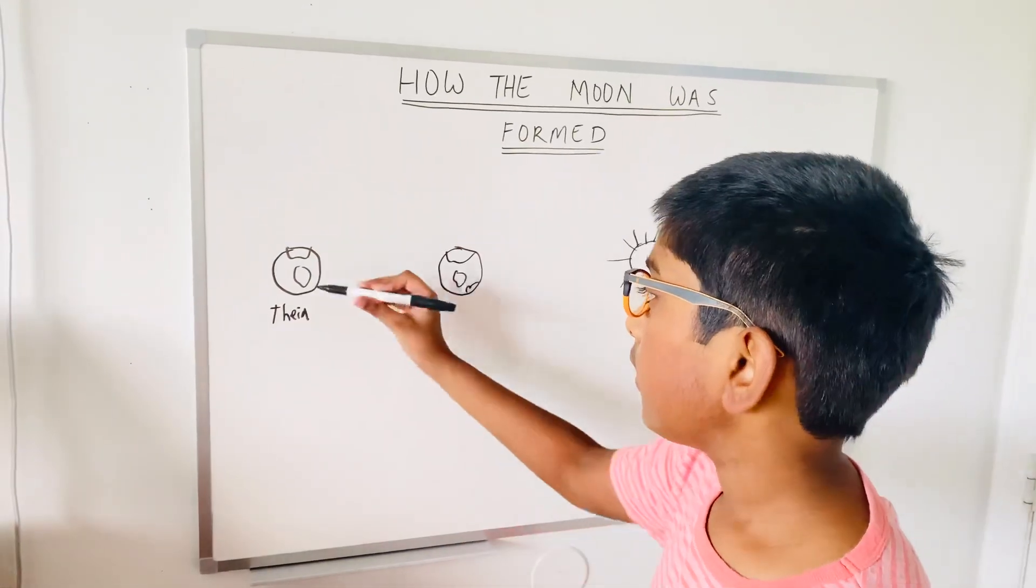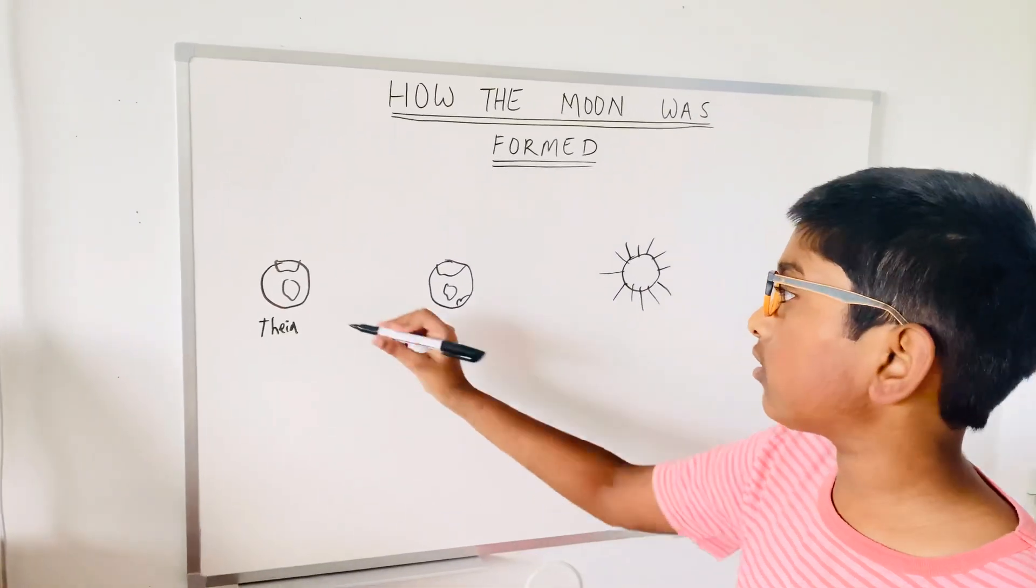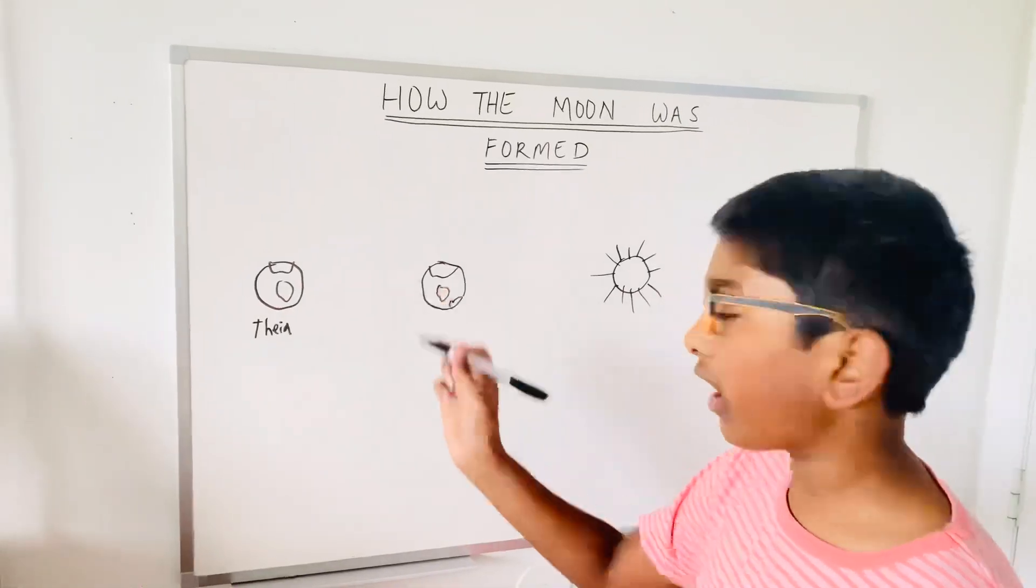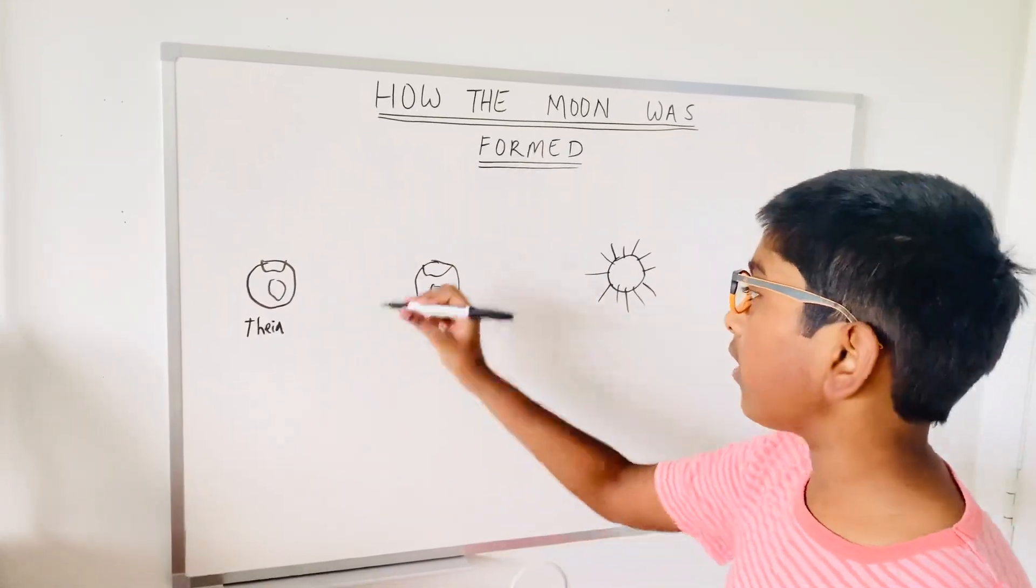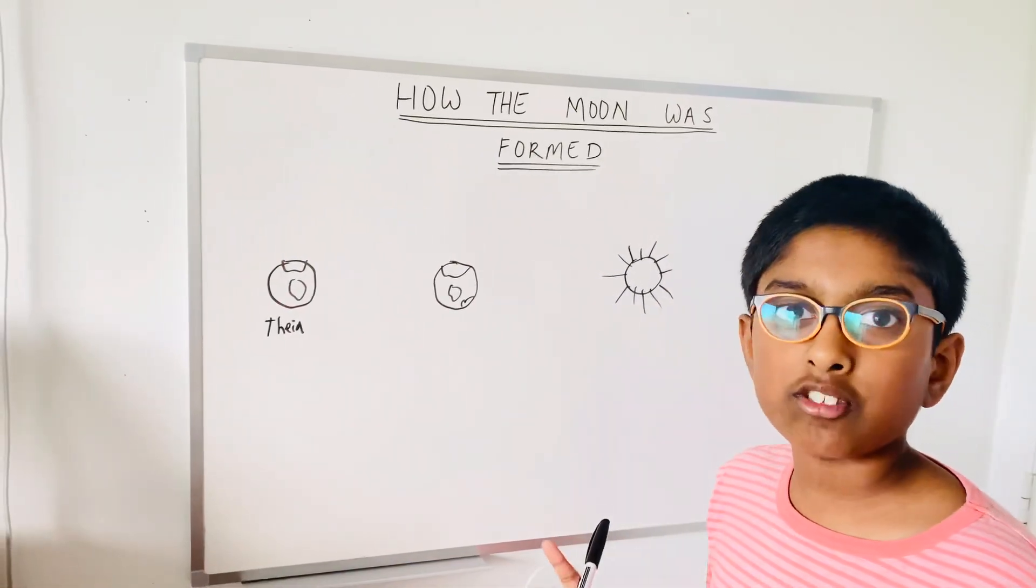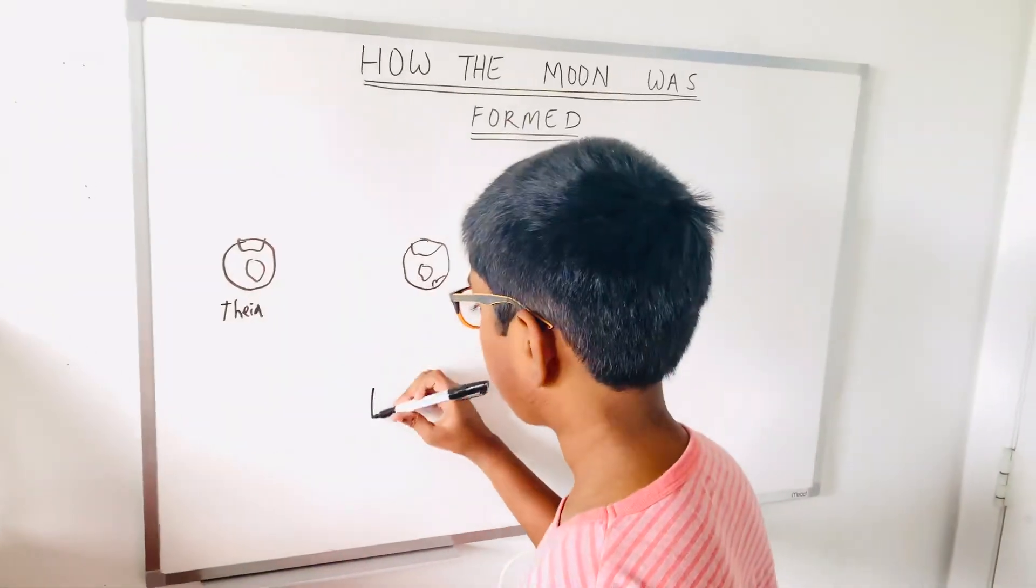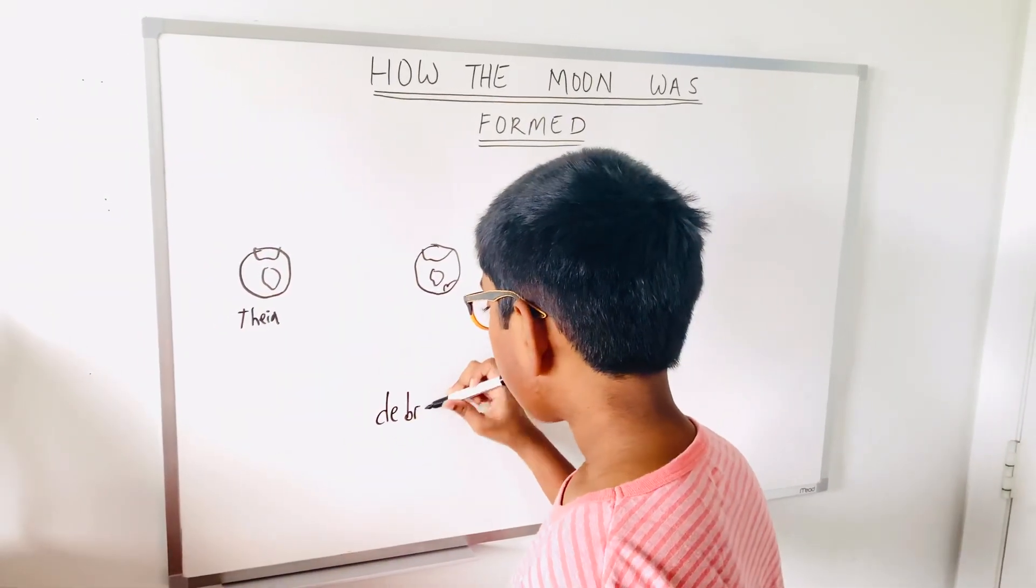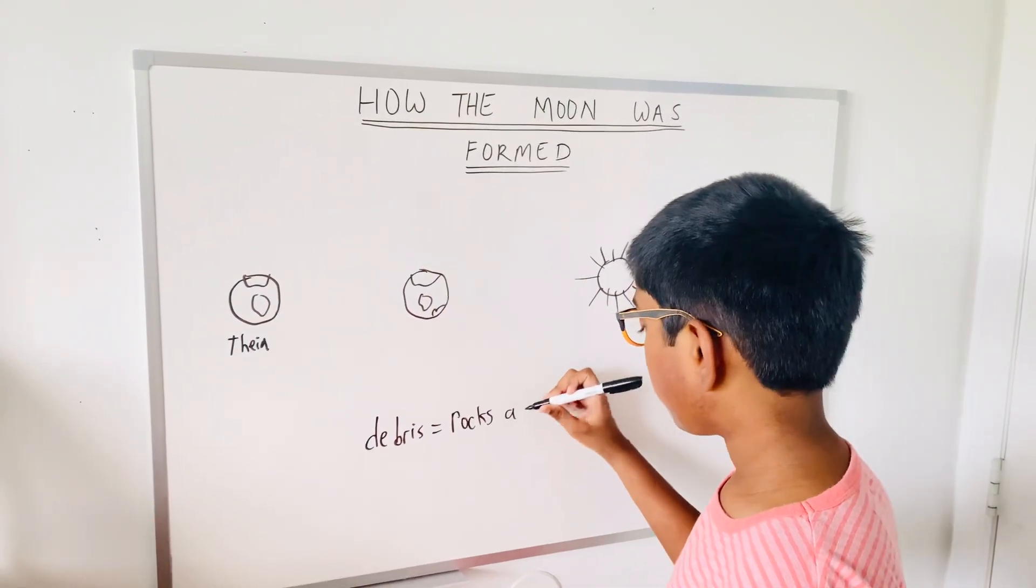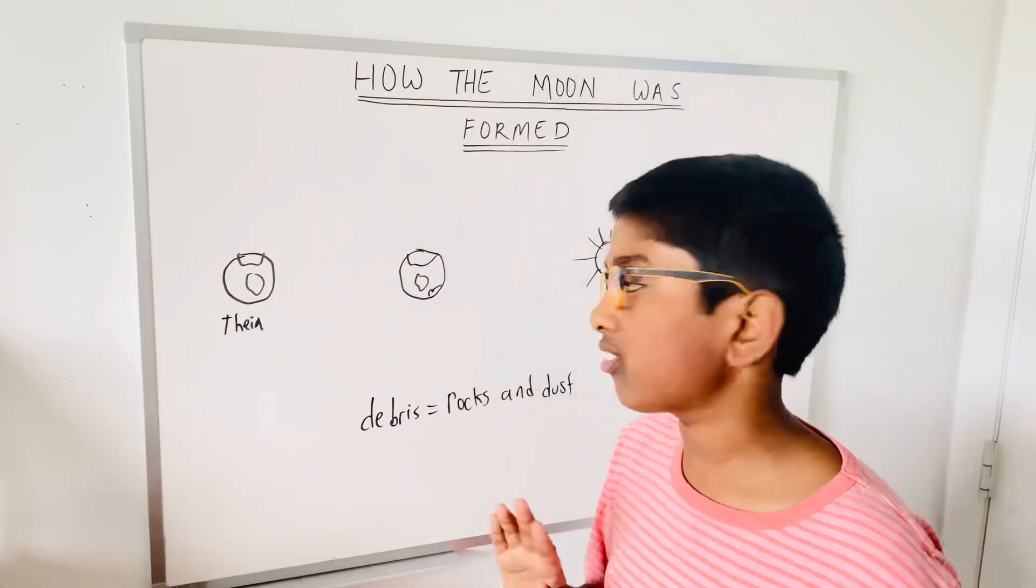And then, it started orbiting in a different way. And then it came to Earth. When it came to Earth, this theory, what happens? It collides with the Earth. And all the Earth's early rocks and everything started going into space. And it was called debris. Debris is like all the rocks, dust from the planet. That's what debris means. Debris means rocks and dust.